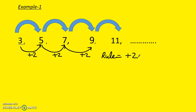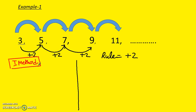Now if they say what will be the hundredth term or the 250th term, it is quite difficult to calculate directly. So let's develop a formula. I'm going to explain two methods. First method: you write down the first term, plus n minus 1, times the difference.